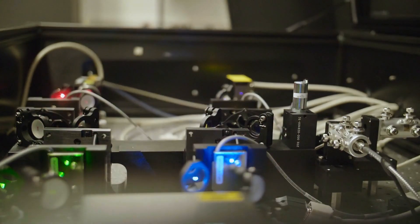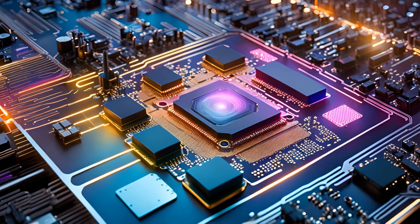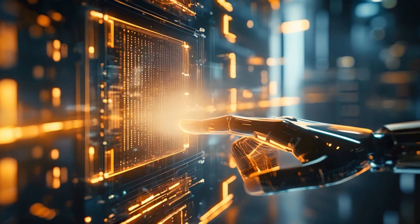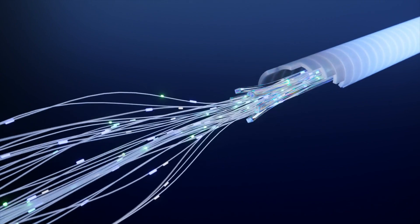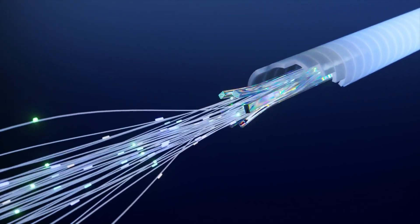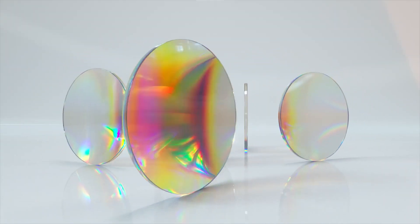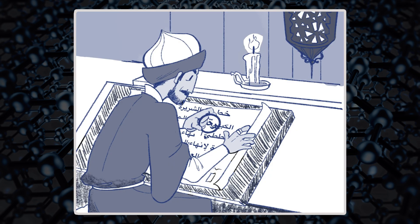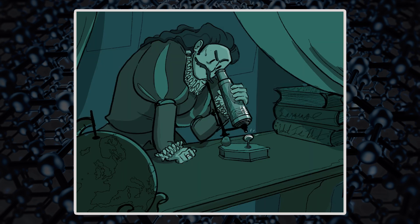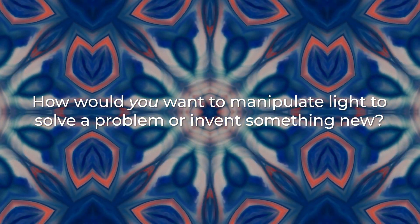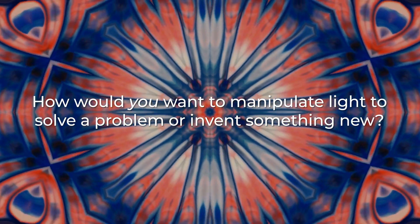Some of the applications of Dr. Follin's research are smaller and more efficient lasers or new types of light sensors. With knowledge about how to manipulate light with materials, we can design even the most creative inventions. For example, lenses are a way to manipulate light with materials. People have been using lenses for hundreds of years and scientists are still finding new types of lenses and other ways to manipulate light. How would you want to manipulate light to solve a problem or invent something new?